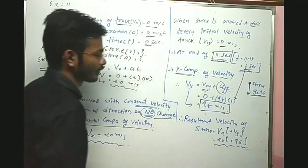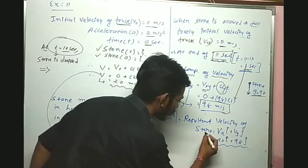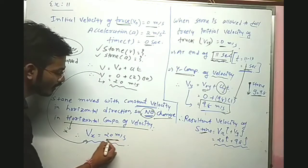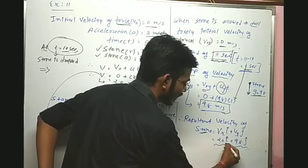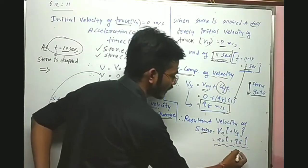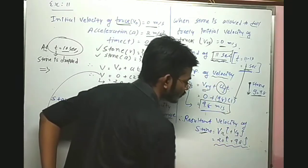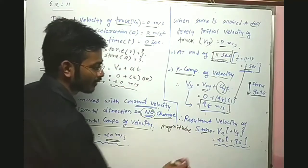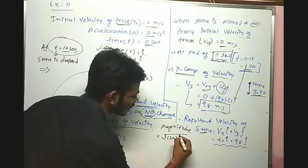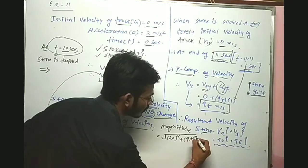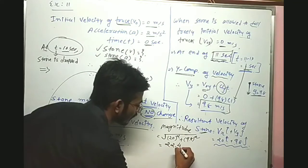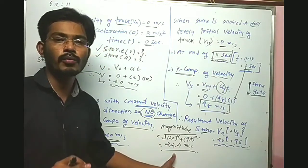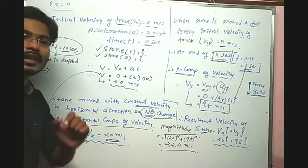The resultant velocity of the stone can be written as vx i-hat plus vy j-hat. vx = 20 meter per second, so 20 i-hat, and vy = 9.8 meter per second, so 9.8 j-hat. To find the magnitude: square root of (20 squared plus 9.8 squared) = 22.4 meter per second. So the velocity of the stone is 22.4 meter per second.